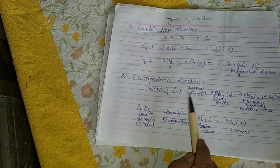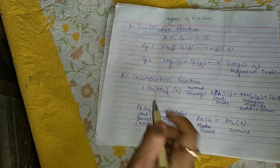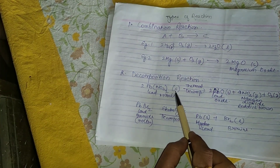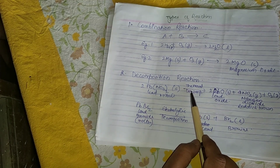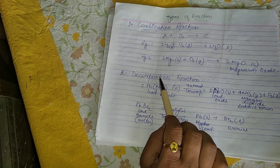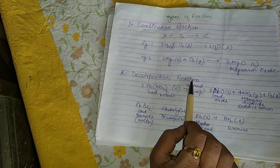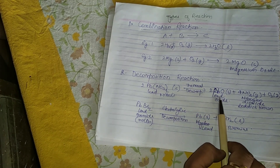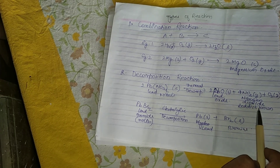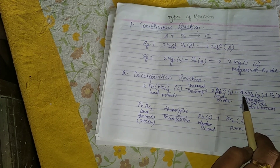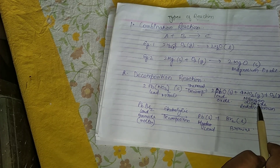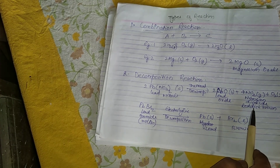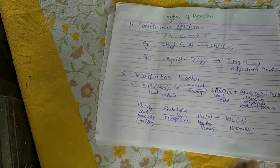The second type is the decomposition reaction, which is the opposite of combination. For example, lead nitrate (Pb(NO3)2) in solid form, when heated, decomposes. On thermal decomposition it forms lead oxide with the evolution of a reddish-brown colored gas — nitrogen dioxide (NO2). This reaction has also been asked many times in board exams. The reddish-brown gas is the key indicator that the question involves lead nitrate.